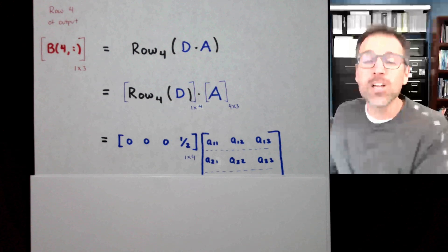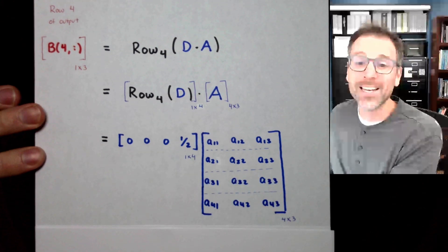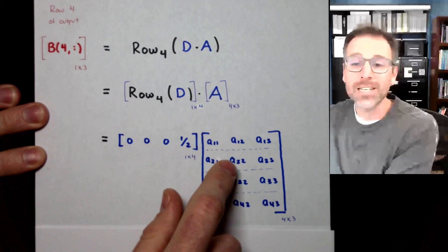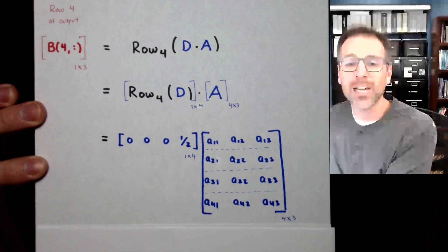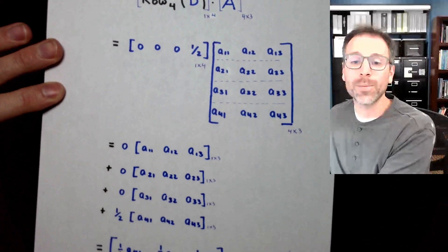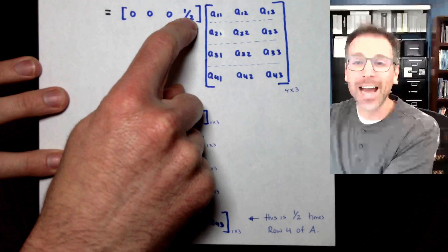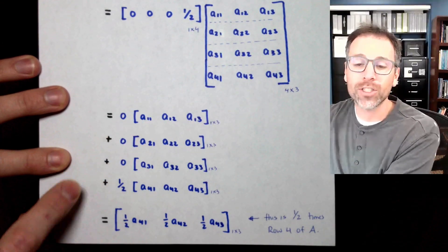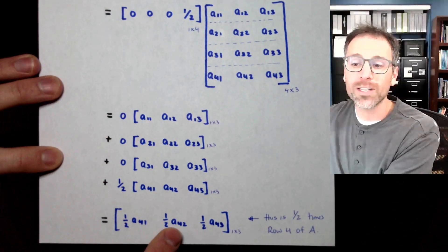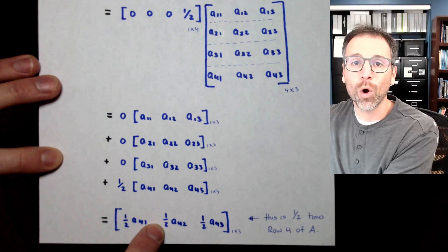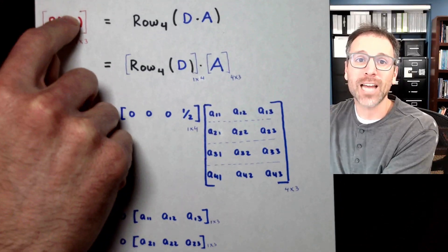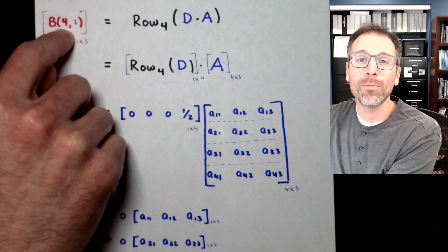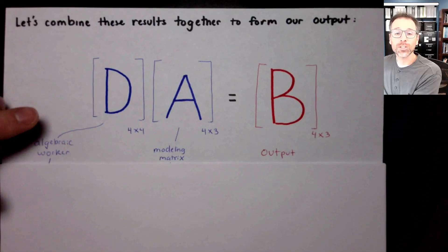So I could actually test myself on what that is, zero times row one plus zero times row two plus zero times row three plus one half times row four. Well, what does that work out to be? It works out to be one half times row four, all other stuff disappears. In other words, this is one half times row four of the original modeling matrix and the results are stored in row four of my output matrix B.